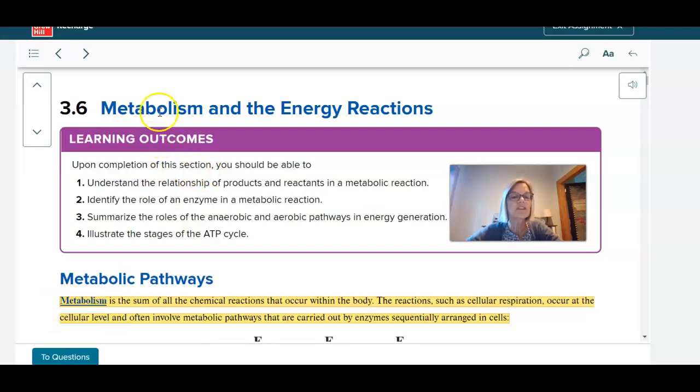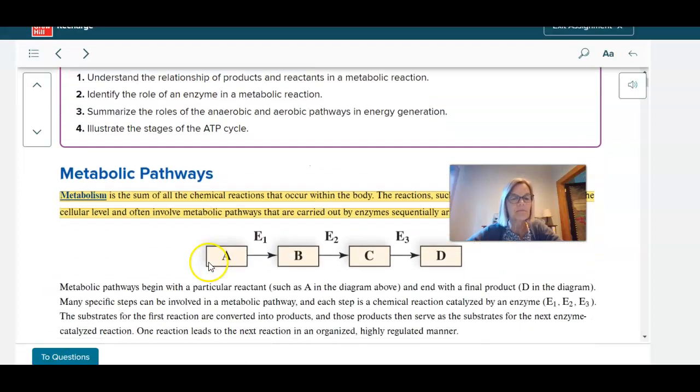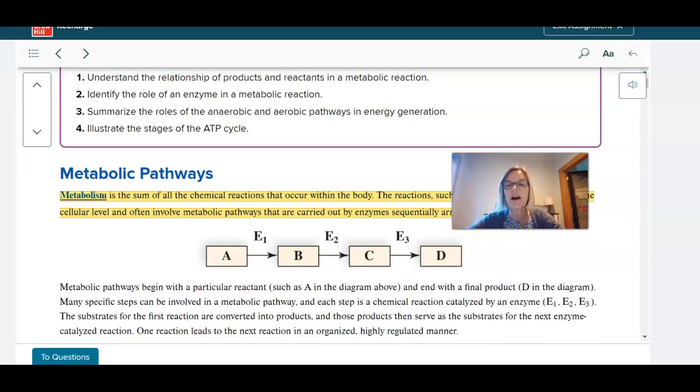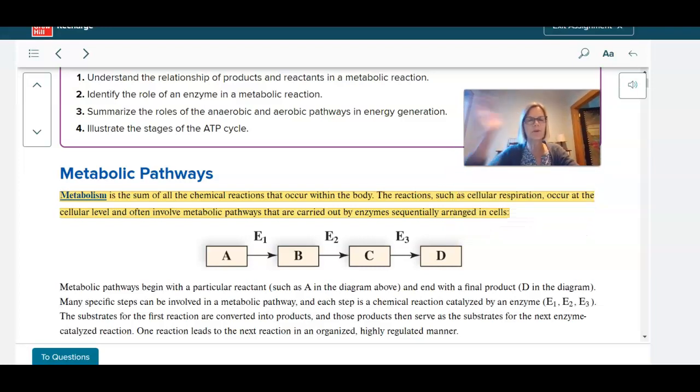So this section talks about metabolism, and you know, we all have some feeling for what metabolism is. We say we have a fast metabolism or slow, but to a scientist, when we're talking about metabolism, we're thinking down to the cellular level. Metabolism is the sum of all the chemical reactions that occur within the body.